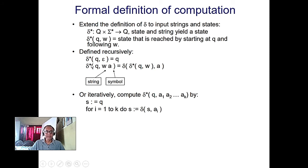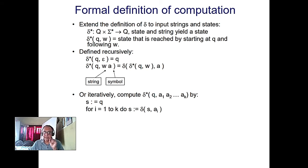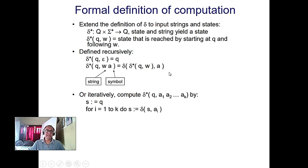The extended transition function is called delta-hat in some books and delta-star in others. It means the subsequent repeated application of the delta function. So if you have a state q and a string w consisting of, say, b and c, you apply delta(q, b) first, then delta on c — the whole combination is called delta-star(q, w). It is the multiple application of delta, or repeated application of the transition function.